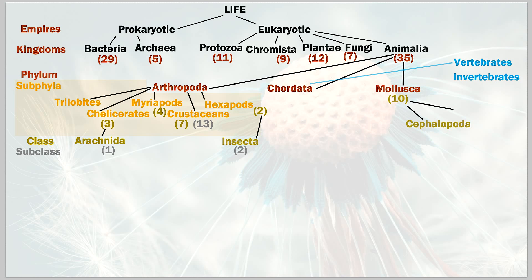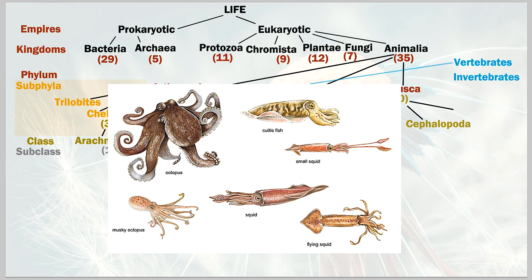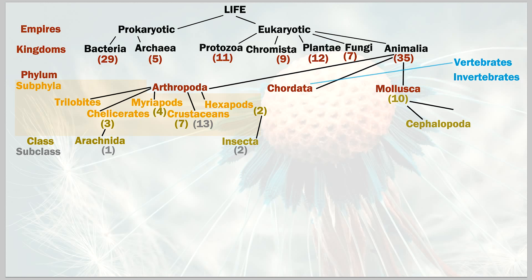In the mollusk section we have cephalopods — the tentacled ones: octopus, cuttlefish, squid, and similar life forms. Those are just a few examples of cephalopods. Mollusks also contain other classes, and I'm going to display just two of the ten classes — the most commonly known ones.